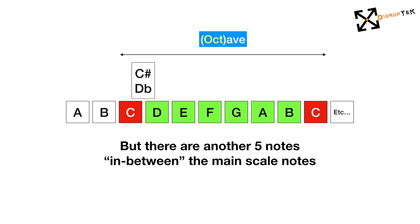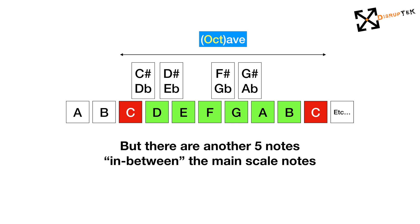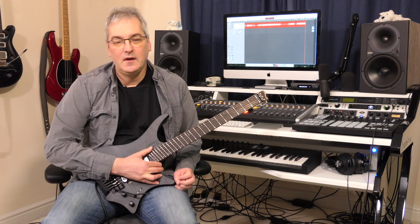Between D and E, we then have a D-sharp or E-flat. Between F and G, we then have an F-sharp or G-flat. Between G and A, we have G-sharp or A-flat. And finally, between A and B, we have an A-sharp or B-flat.